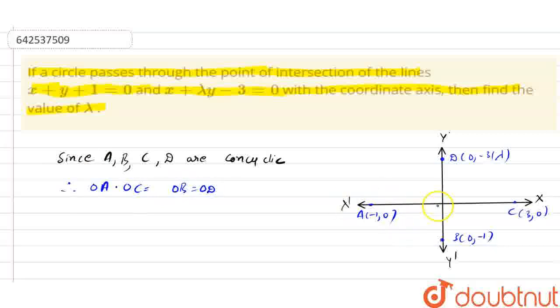What is OA? This is our O, that is the origin having the coordinate 0, 0. So we can say OA into OC that will be equals to OB into OD. Now we can say by putting the value we have 1 into 3 that will be equals to OB we have 1 into, we can put the value of OD in modulus then we have 3 by lambda.